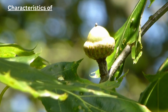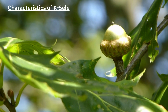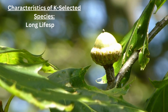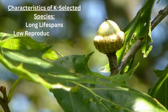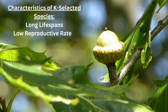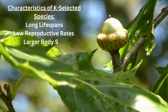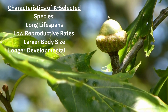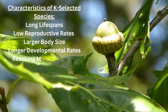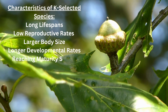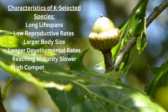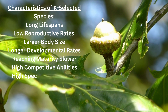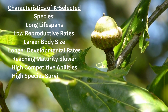Thinking this way, we can understand the traits of a K-selected species we have at hand. With long lifespans and low reproductive rates being what they command, we will see larger body size and longer developmental rates in demand, along with these species reaching maturity slower, having high competitive abilities, and high species survivorship, just as these organisms have planned.